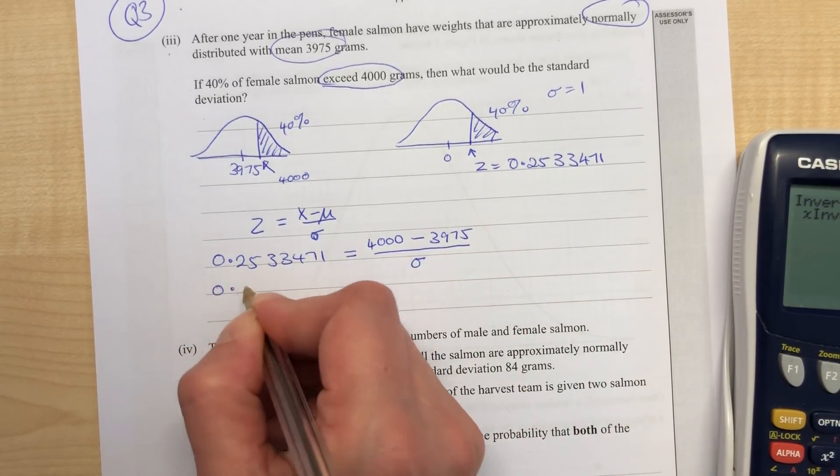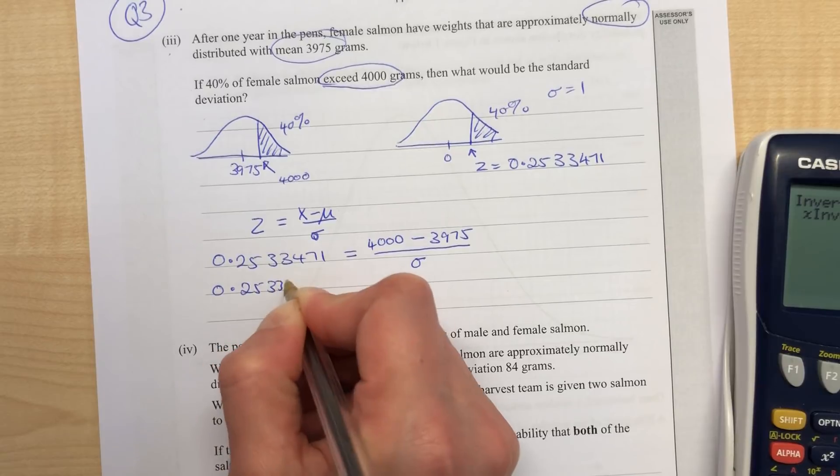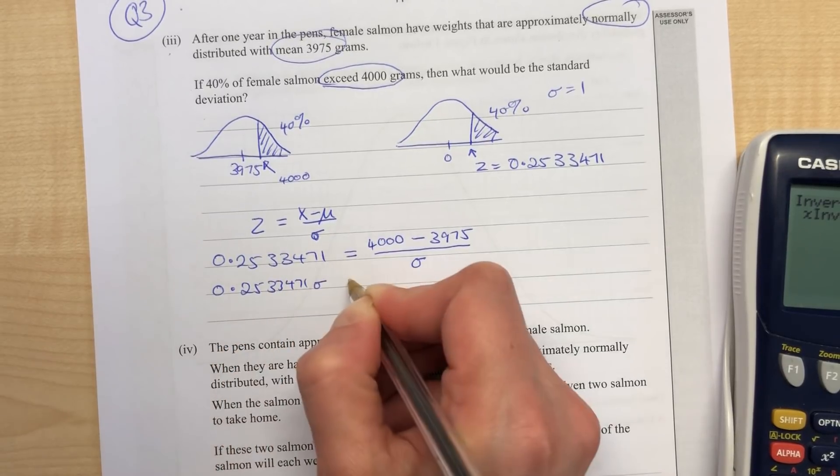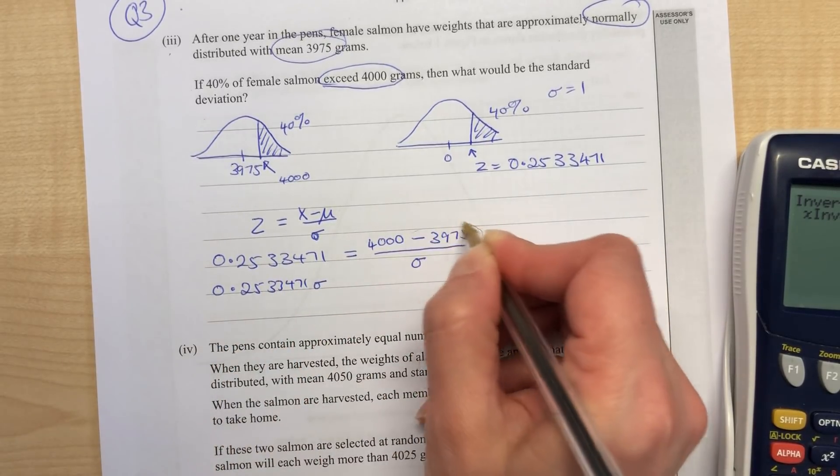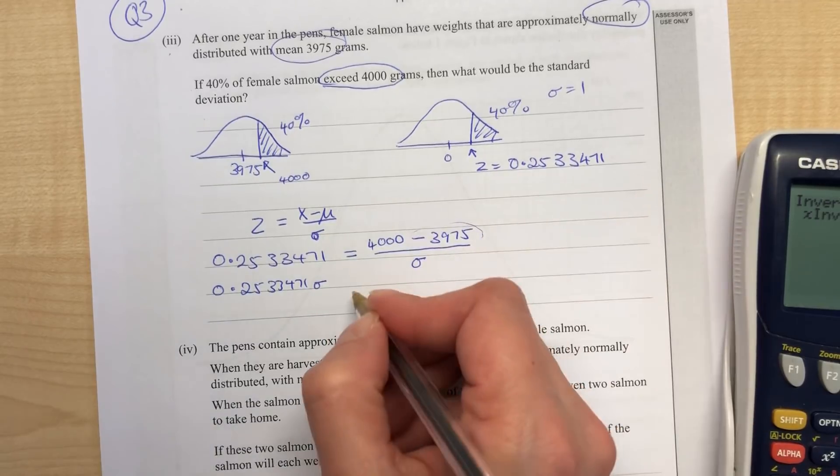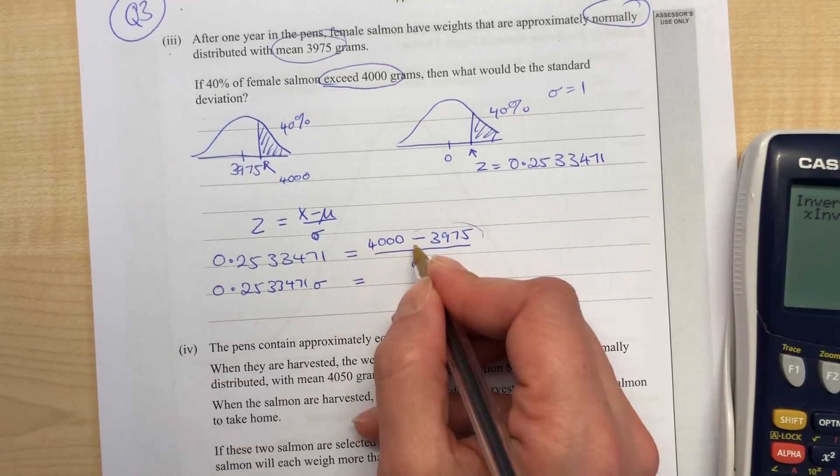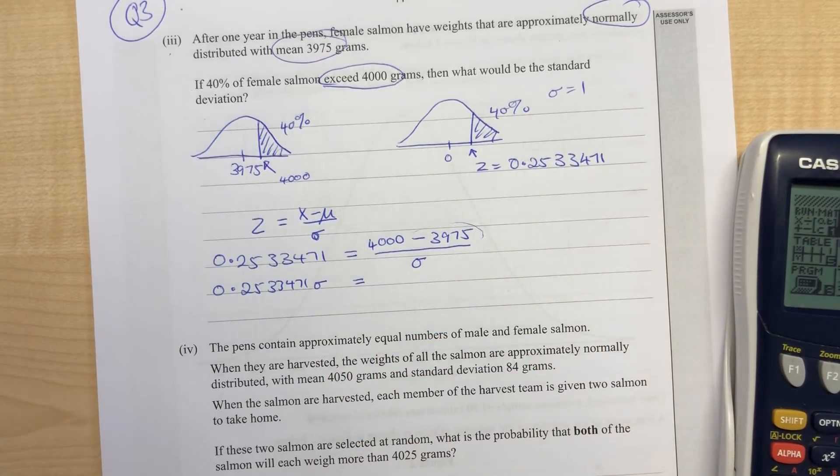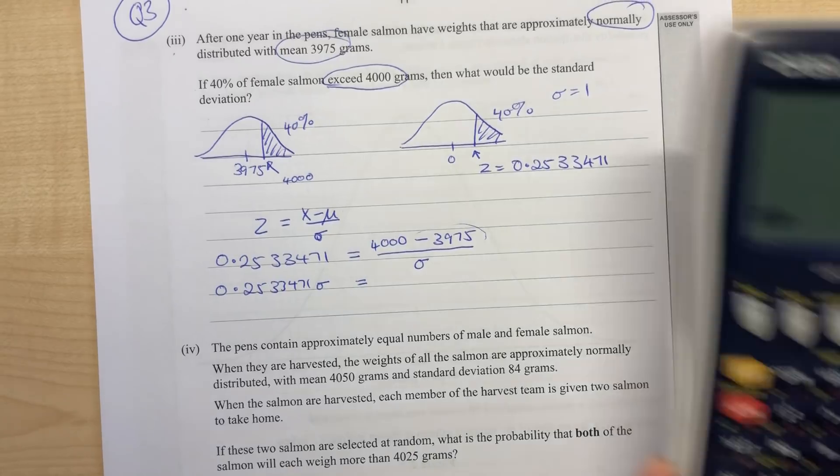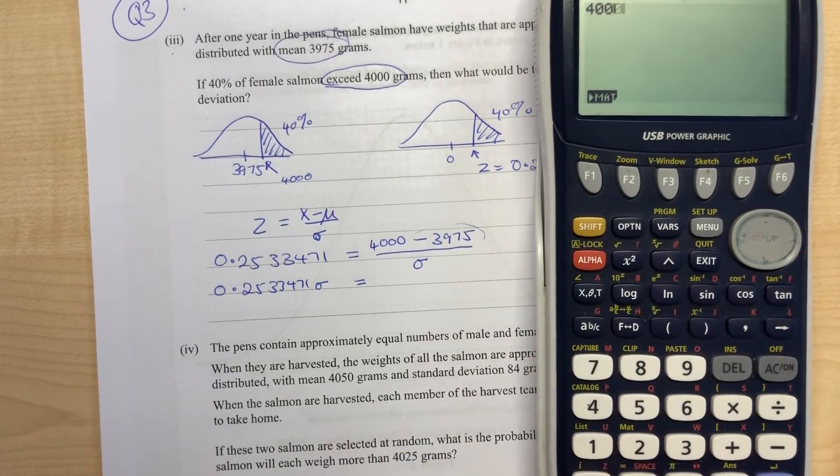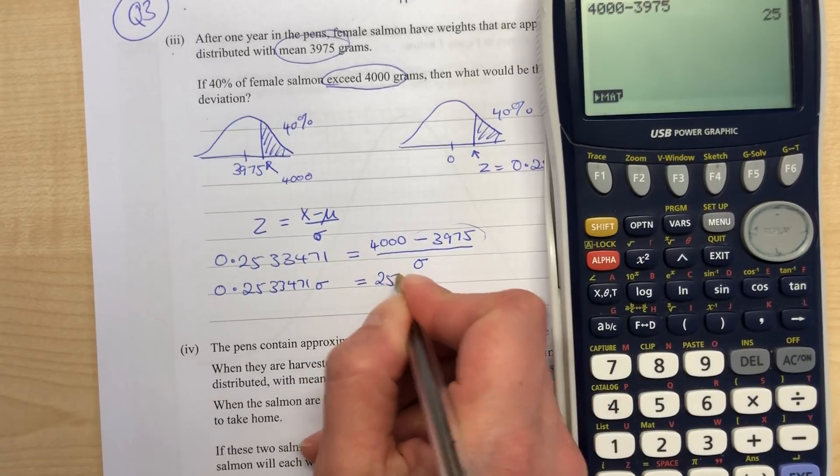We need to rearrange this to put it into the calculator equation solver. Bring the sigma up: 0.2533471 sigma. We can just do the 4000 minus the 3975, which equals 25.